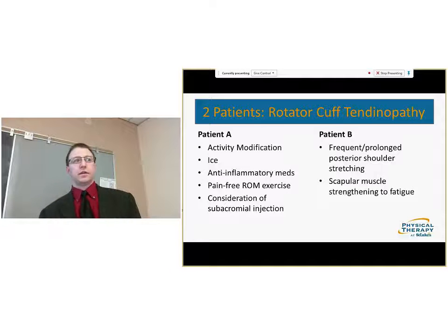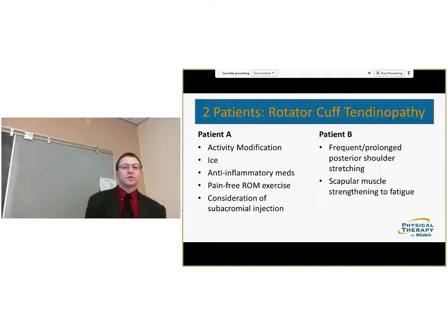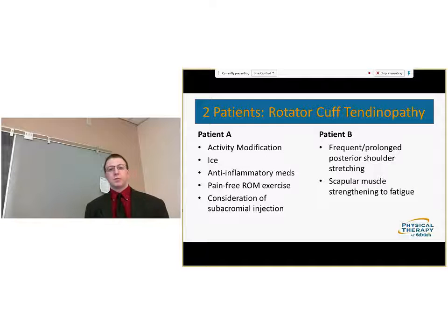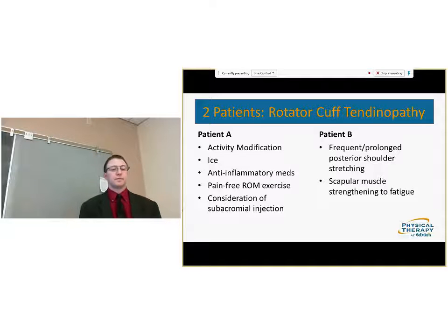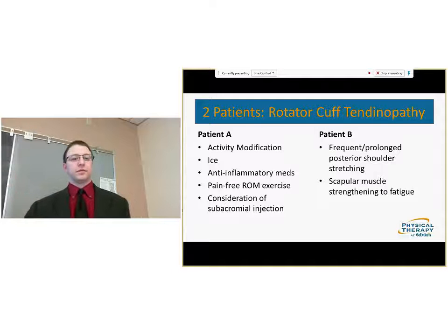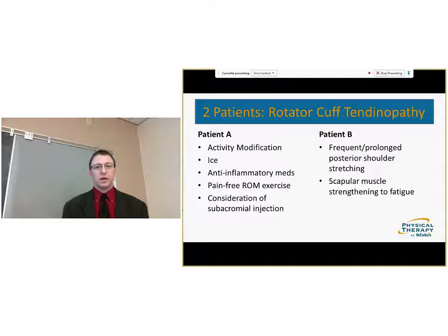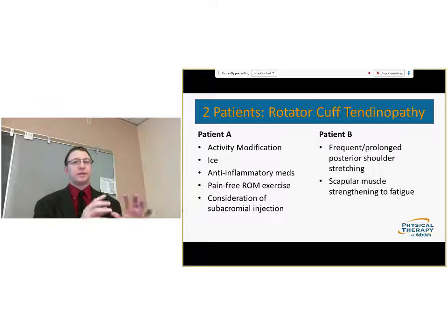Patient A would initially be addressed with activity modification, ice, anti-inflammatory medication, pain-free range of motion exercise, and possibly a subacromial injection. Patient B, on the other hand, would receive more emphasis on frequent prolonged posterior shoulder stretching and scapular muscle strengthening with resistance to fatigue. Patient A's symptoms may change over the episode, and once higher pain levels come down, they may resemble more those of Patient B with specific impairments. In both cases, the diagnosis of rotator cuff pathology remains accurate, but the specific pain symptoms and impairments dictate very different treatment approaches.